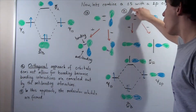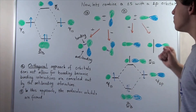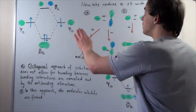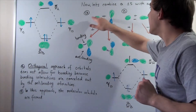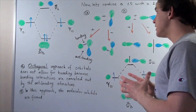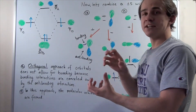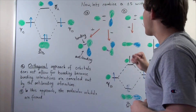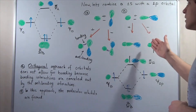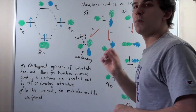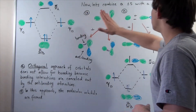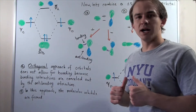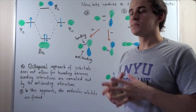Now let's combine a 1s orbital and a 2p orbital. Remember, a 2p orbital has this figure-eight shape. Let's look at A and B — two potential ways in which our two atomic orbitals can interact in space. In part A, we have an orthogonal interaction. In part B, we have a non-orthogonal interaction. Orthogonal simply means perpendicular. Let's see which one of these will form molecular bonds and which one will not.